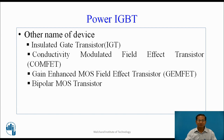Other names of the IGBT device include: Insulated Gate Transistor (IGT), COMFET — Conductivity Modulated Field Effect Transistor, GEMFET — Gain-Enhanced Metal Oxide Semiconductor Field Effect Transistor, and Bipolar MOS Transistor.